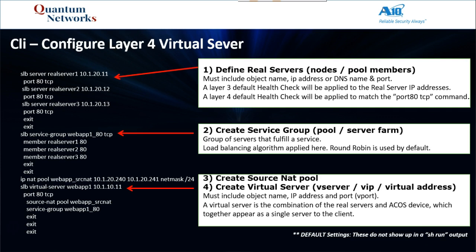Step two: create our service group. This is called a pool or server farm on other devices. It is a group of servers that fulfill a service — a web service, a database service, a CRM service, and so forth. Also, the load balancing algorithm is applied here. By default, round robin is used. Look at the CLI command snippets and you'll see that I did not specify a load balancing algorithm — or a method, as it's often called in the ATN documentation. If you specify no algorithm, round robin is used by default and it will not show up in a show run output. You will need to run the show run with hyphen default command to see these default configuration examples.